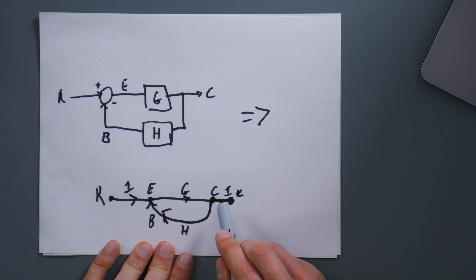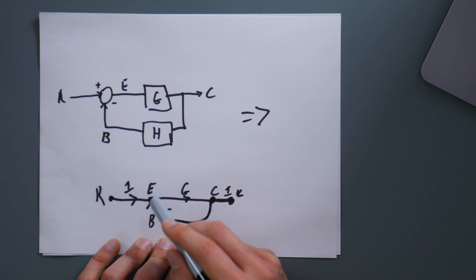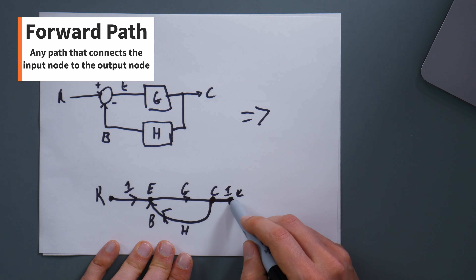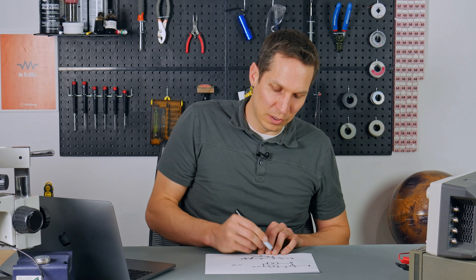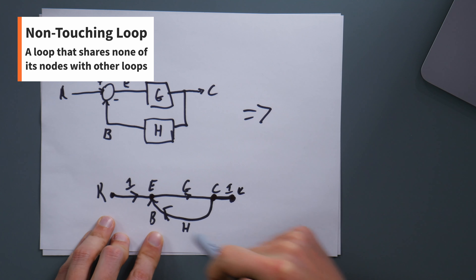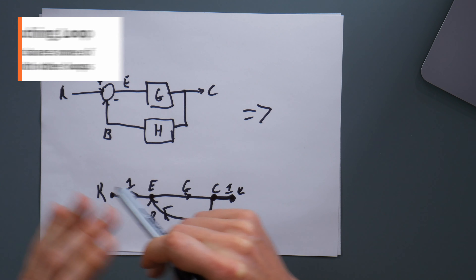The second rule is: if the summing point is before the takeoff point, they are represented by a single node. Since the summing point is before the takeoff point, it is a single node in the signal flow graph. The third rule is: if a summing point is after the takeoff, then you get two nodes. On the right, where you have the takeoff point going into G3 after G2 and then the summing point where G4 comes in, that's actually separated into two separate nodes — because the point where G3 splits off is a different value than the point where G4 will be.